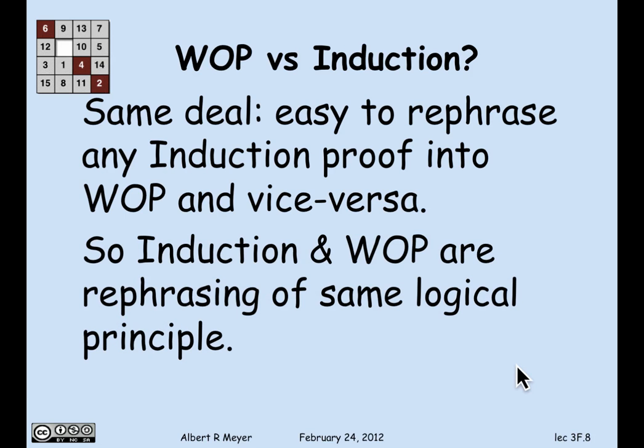Conceptually, these apparently different inference rules — strong induction, ordinary induction, and the well-ordering principle — are really just one. The others can be justified in terms of it and explained as variations of it. So it's intellectually economical to not have a proliferation of different reasoning principles.